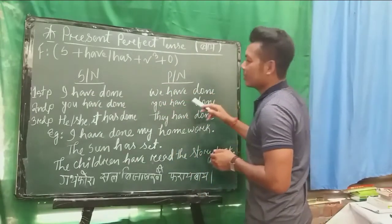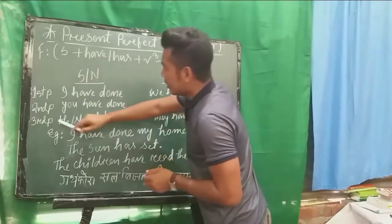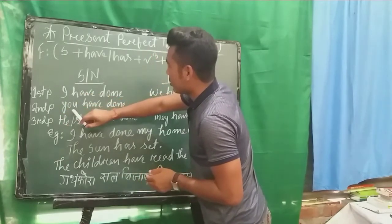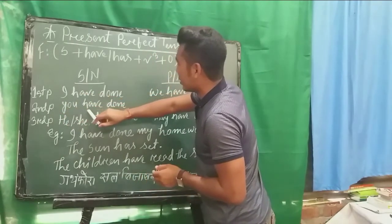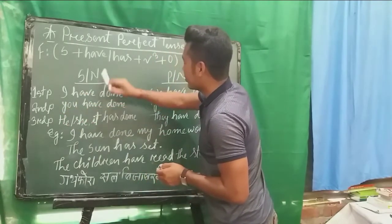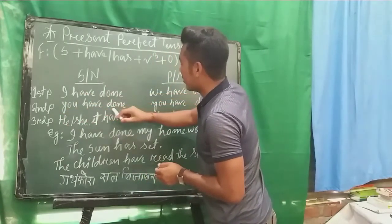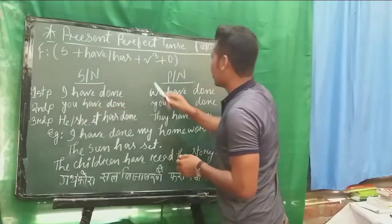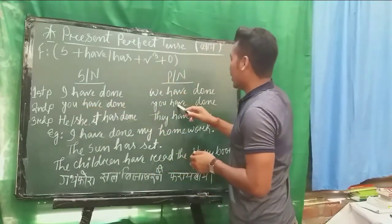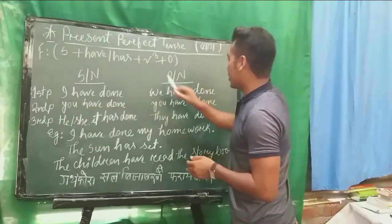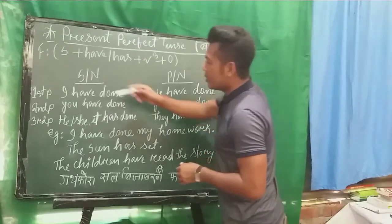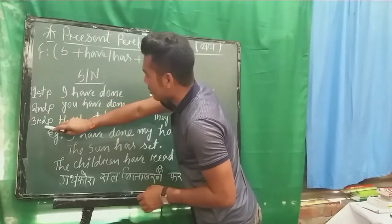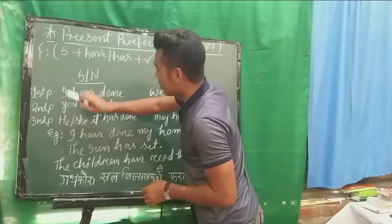Every person is done. Next, second person is singular number of U. U and ZMA is done. Next, third person is singular number of E.